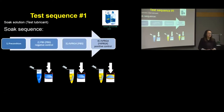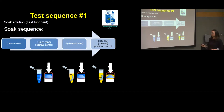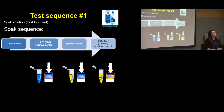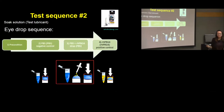In test sequence one, we first precondition the eyelid to clear any debris, then run a negative control soaking and testing lenses in saline. Next, we soak lenses in RH-PRG4 but test them in saline. Finally, we soak and test lenses both in RH-PRG4. In test sequence two, everything is the same except for step three: we soak lenses in saline, then add three drops of RH-PRG4 onto the lens 30 seconds before testing in saline.